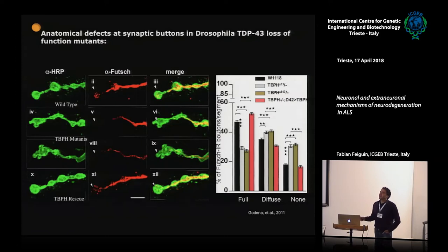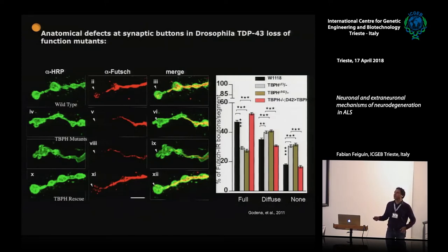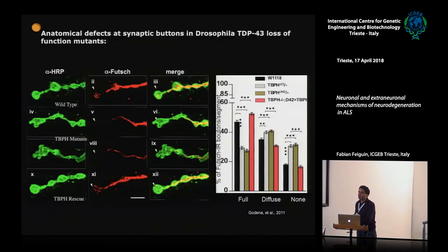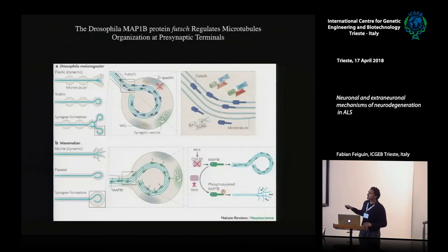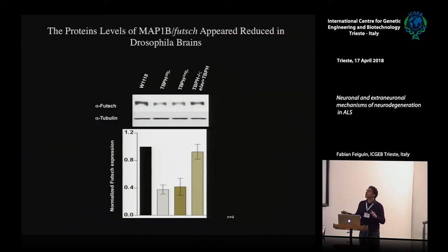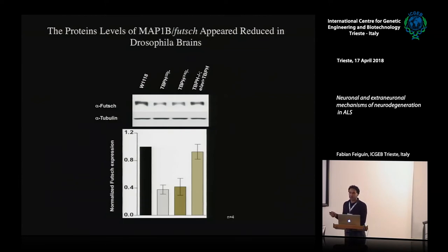These round structures are due to the presence of a protein called Futsch in Drosophila — in humans it is conserved and called MAP1B. It is a microtubule binding protein associated with microtubules that produces these particular structures. We confirmed the histochemical data by Western blot using an antibody against MAP1B, and found it is effectively reduced in mutants and can be rescued. The protein is downregulated in TBPH mutants.